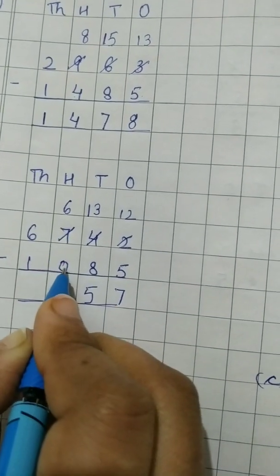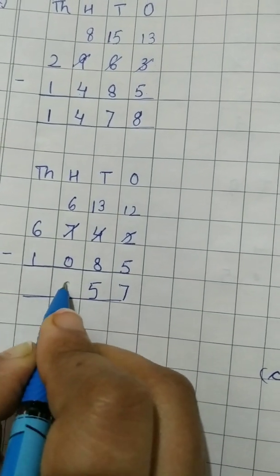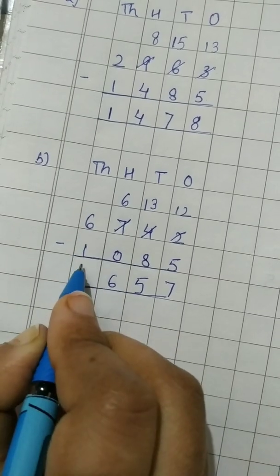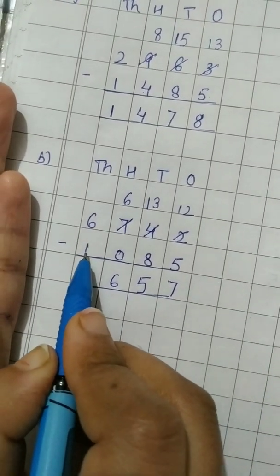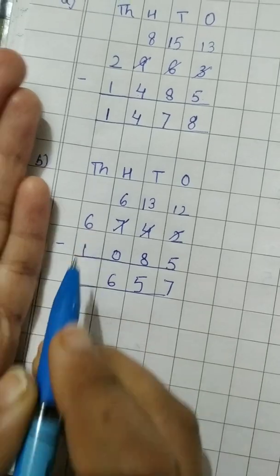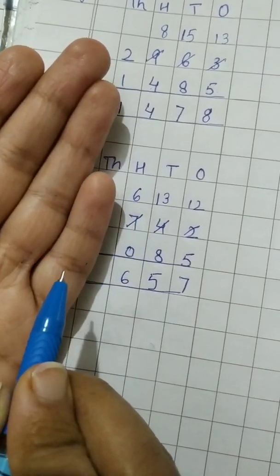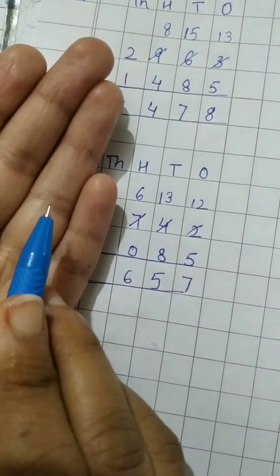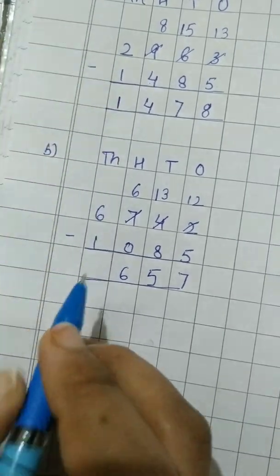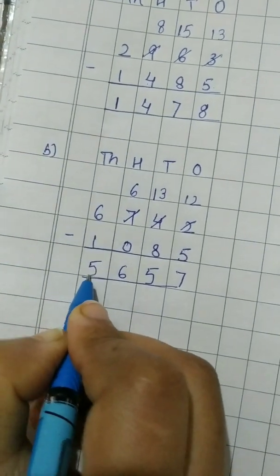Now 6 minus 0 possible. So 6. 6 minus 1. Now we have to go from 2 to 6. 2, 3, 4, 5, 6. Answer is 5 lines. So 6 minus 1, 5.